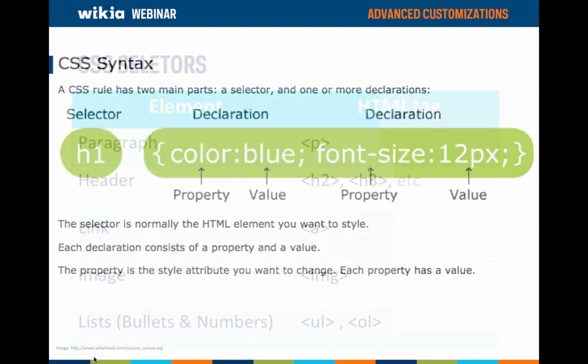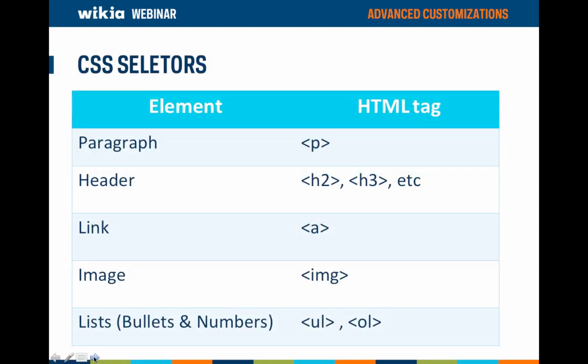Selectors can be any HTML element — a paragraph, a header, links, images, bulleted and numbered lists — essentially anything that exists within the structure of a webpage. Each selector uses a specific HTML tag which you need to know. The table here shows some common HTML tags used on wikis. Remember: in CSS syntax you do not need to include the greater-than and less-than signs from the HTML tags — just the text within those symbols. For example, for a paragraph, just use 'p.'